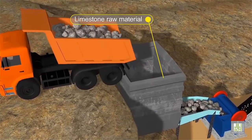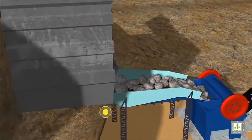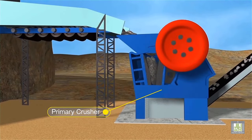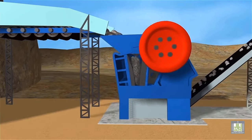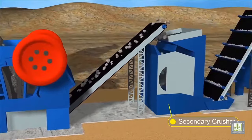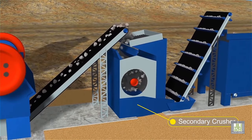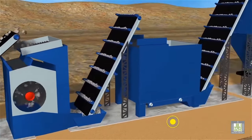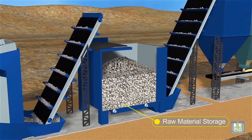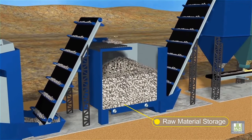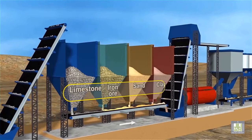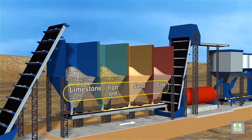Limestone and sand or rock is quarried, crushed, and transported to storage stockpiles near the kiln, where pre-blending takes place.